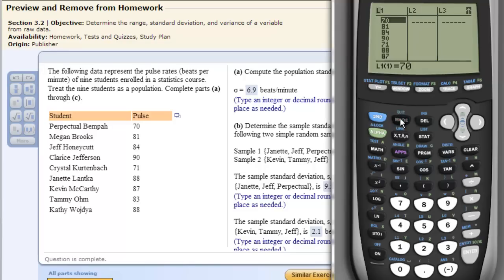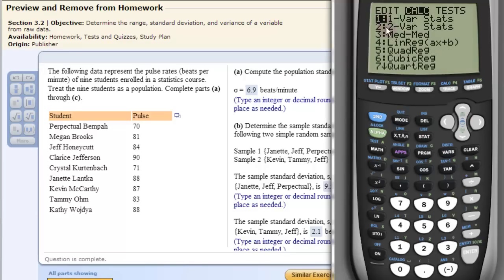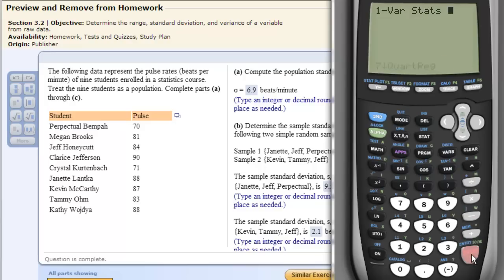Once it's in there, click back to the main menu, and then click STAT over to Calculate, and we want 1, the 1-Var Stats, 1 variable stats. Click Enter.